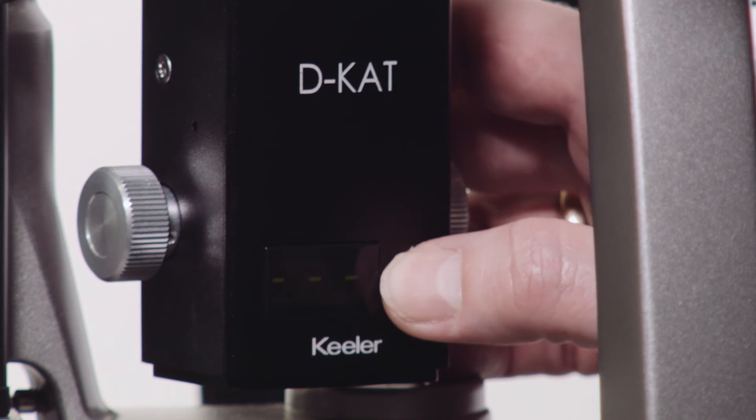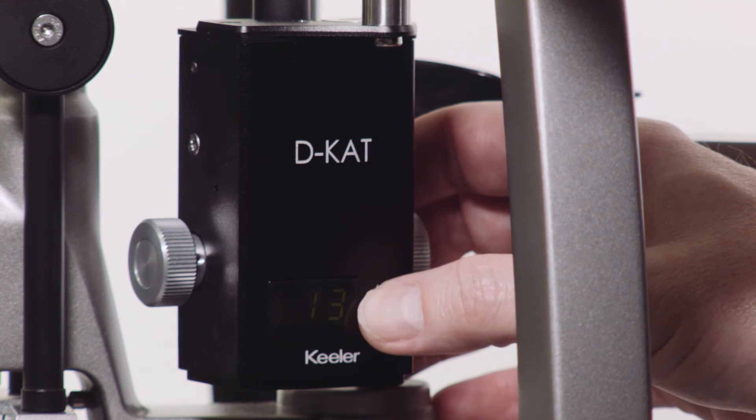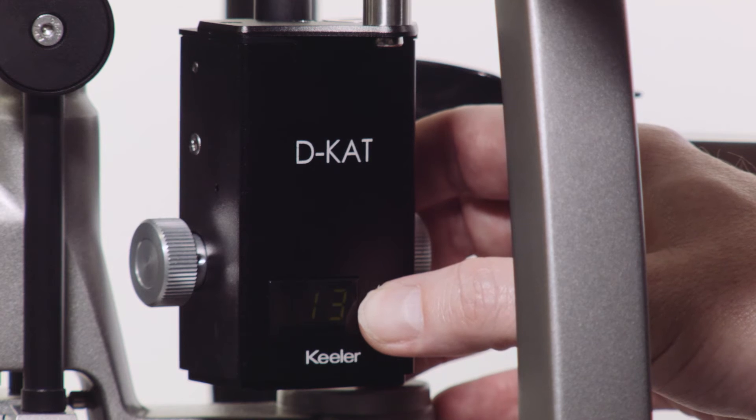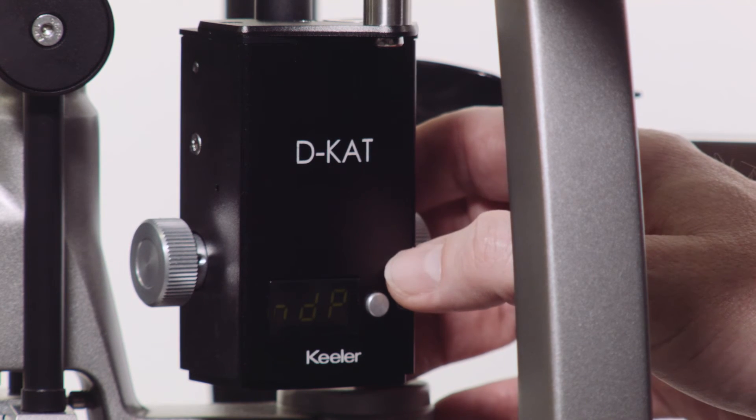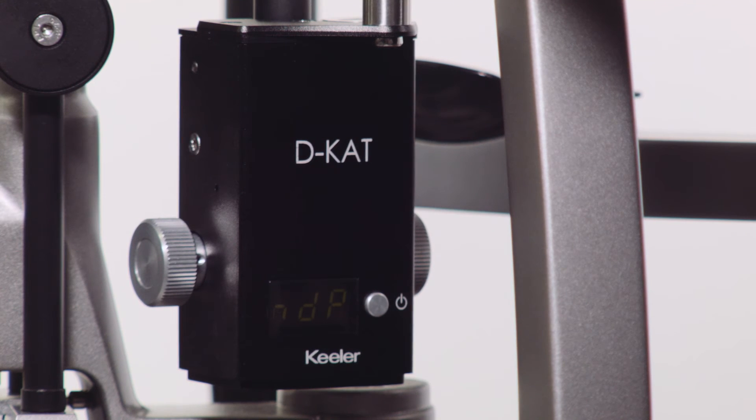Turn it on here and change the display settings as you require. The D-K-AT can display in either whole numbers or scientific measurements, down to a tenth of a millimeter of mercury. To change the decimal point setting,